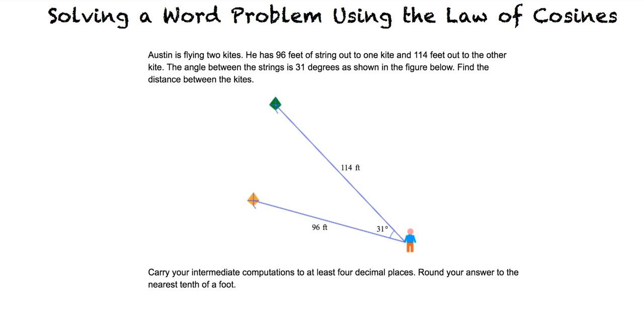We are then told to carry your intermediate computations to at least four decimal places and to round your answer to the nearest tenth of a foot. Using the image, we can create a triangle and assign variables. We were asked to find the distance between the kites, or side A of the triangle. This can be done using the law of cosines.